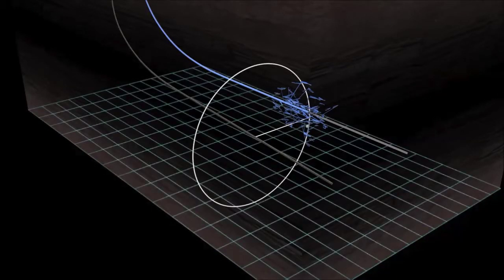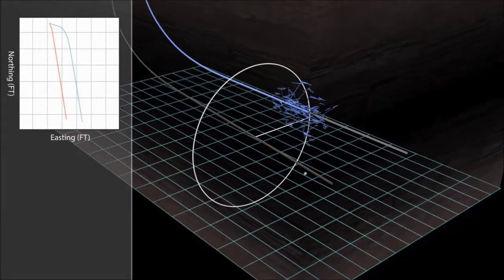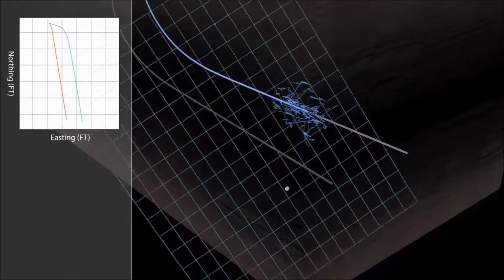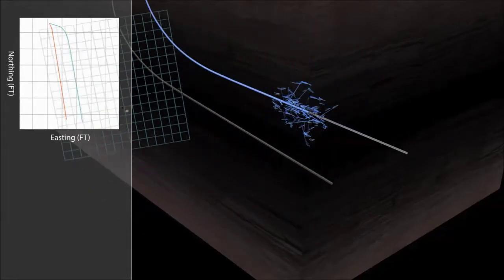We make the assumption that all events originate from the direction of the fracked well and occur on the same horizontal plane. These assumptions allow the events to be plotted on a plan view.